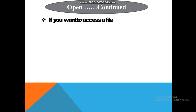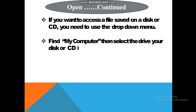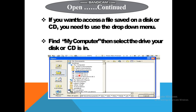If you want to access a file saved on a disk or CD, you need to use the drop-down menu, find My Computer, then select the drive your disk or CD is in. अगर हमने अपनी file किसी disk या CD में save की है, तो My Documents का यह drop-down open करना पड़ेगा। उसके बाद उस drive में जाना है जहाँ हमारी disk या CD available होगी — उस पे click करके हमें अपनी file मिल जाएगी।